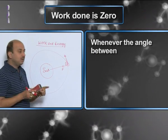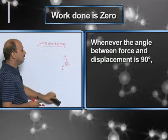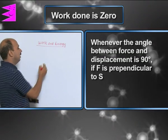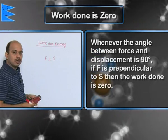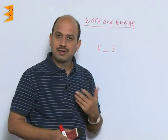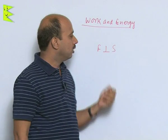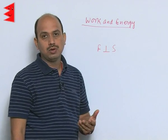Whenever the angle between force and displacement is taken 90 degrees, that means if F is perpendicular to S, we can say the work done is zero. So there are three examples: when the work done is F into S that is maximum, when the work is equal to negative, and when the work done is equal to zero.